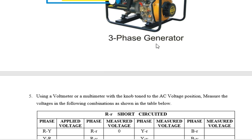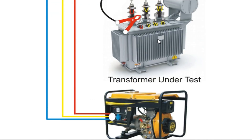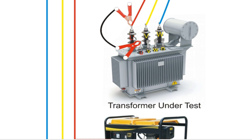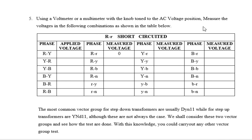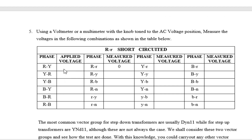When the generator has been connected, prepare a data sheet to record your voltage measurements. Note that the red phase R (high-voltage) is shunted to small r (low-voltage). You will use a voltmeter or multimeter set to AC voltage position to measure the voltages and record them on the data sheet.